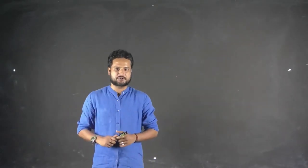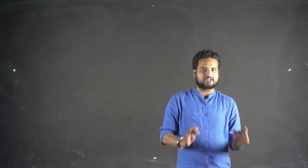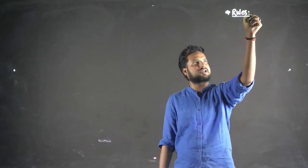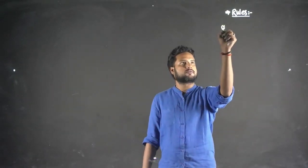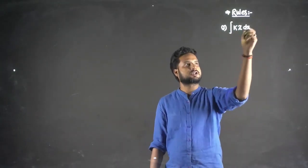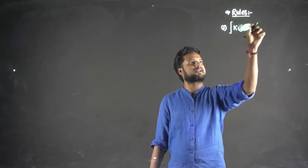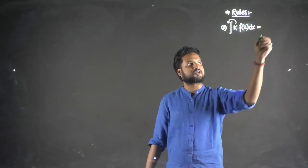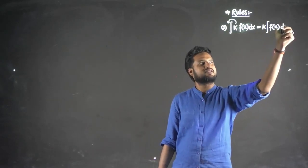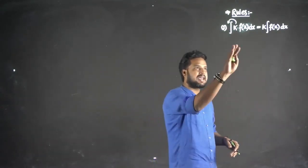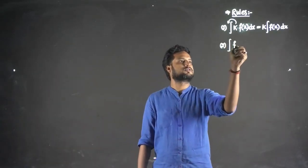Welcome back, we're going to continue with integration. There are standard formulae and a few special formulae we can discuss now. Let me take you to the rules again, like the way we studied in derivatives. First rule: if you are integrating and there is a constant multiplied to a function, that constant can be kept outside. This is quite normal — everybody must be aware that a constant term can be taken outside for limits, derivatives, integration, and everything.